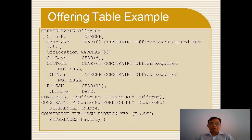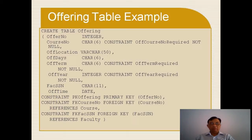Now I go to another CREATE TABLE statement — I will create the Offering table. In this case, I have the attributes: offer number, course number, offer location, offer days, offer term, offer year, faculty social serial number, and offer time. I have three constraints: the first is a primary key constraint on offer number, the second is a foreign key constraint on course number, and the third is a foreign key constraint on faculty social serial number.